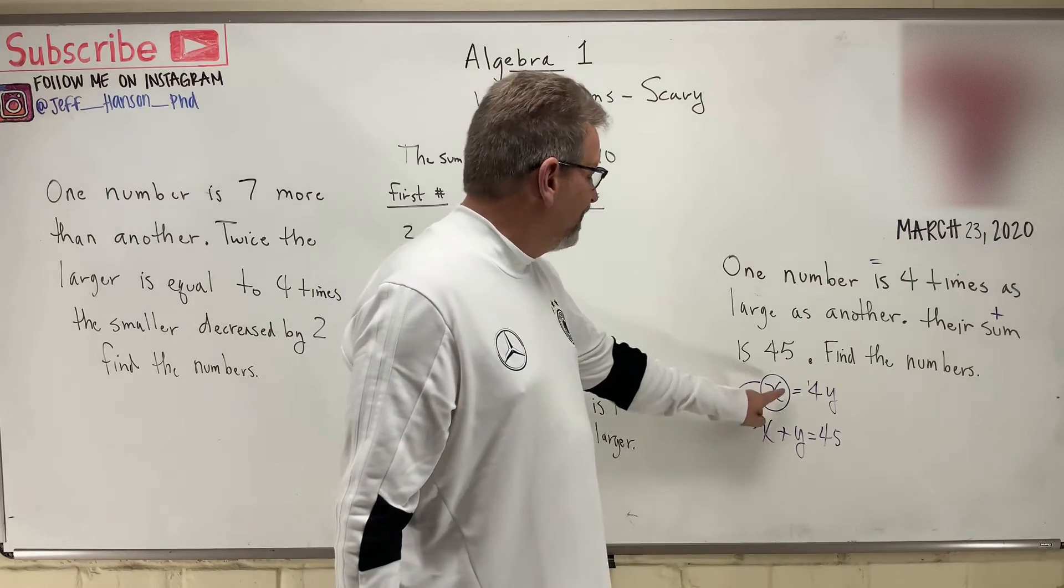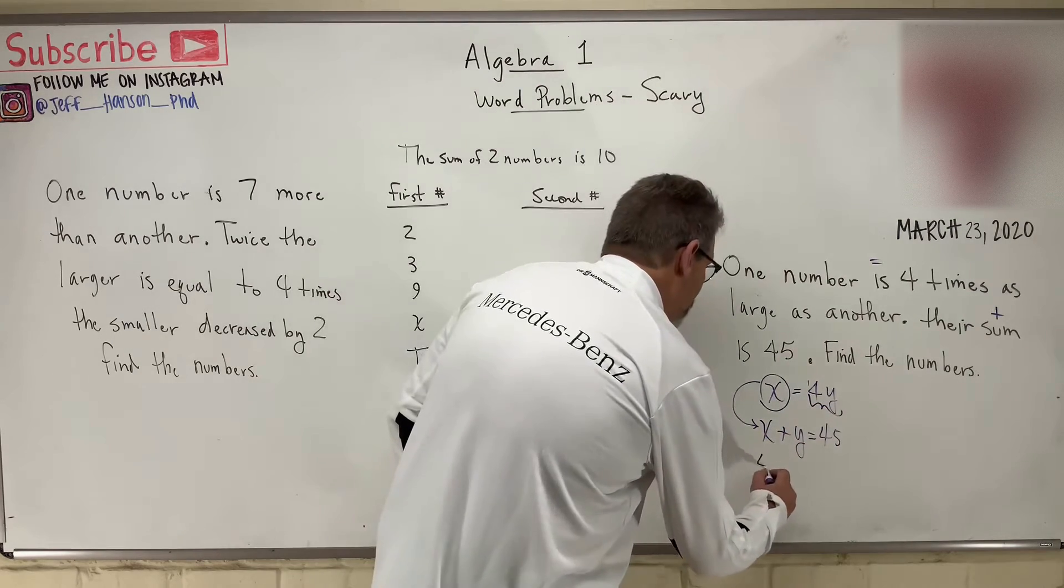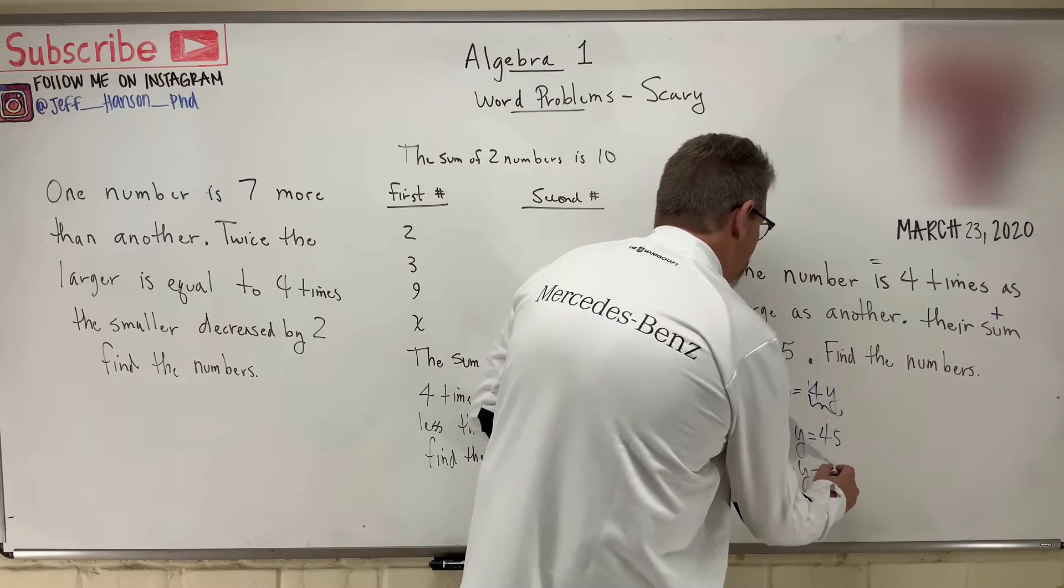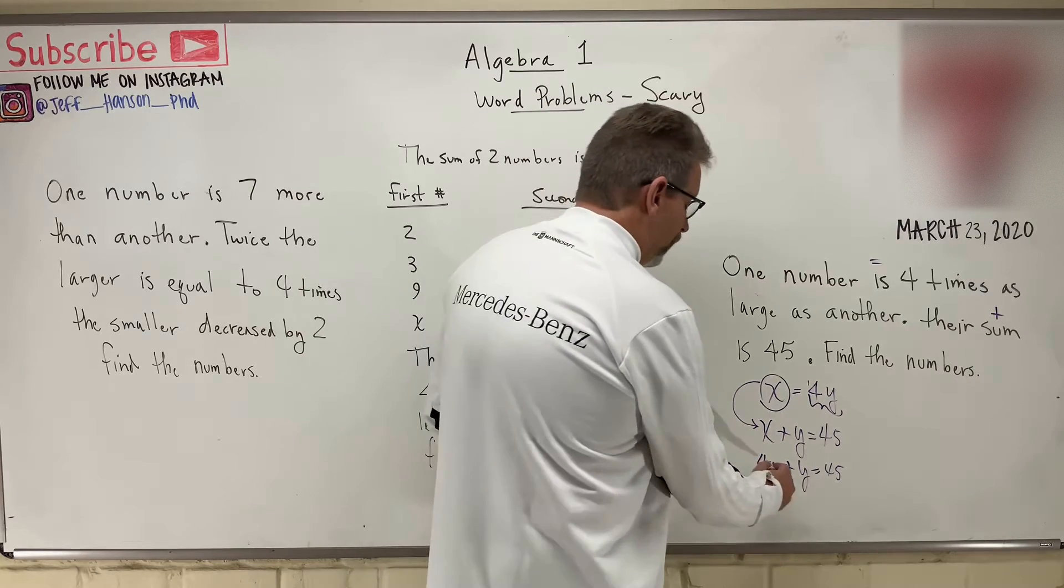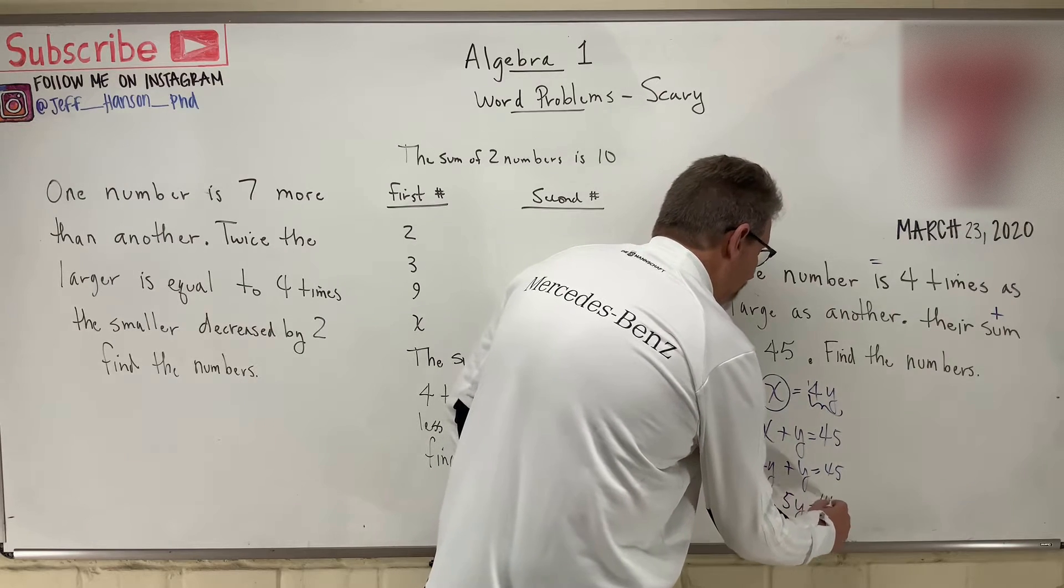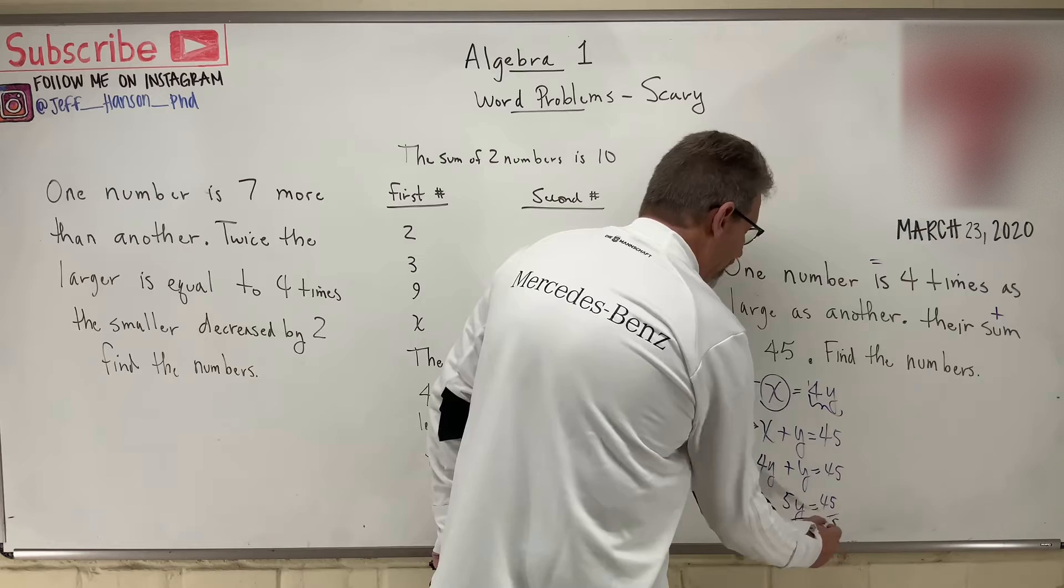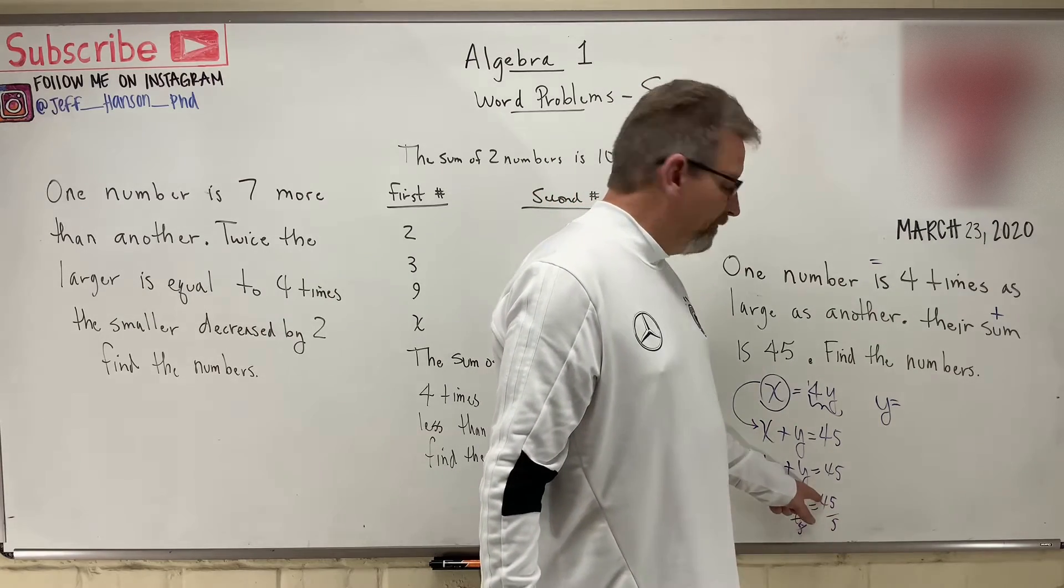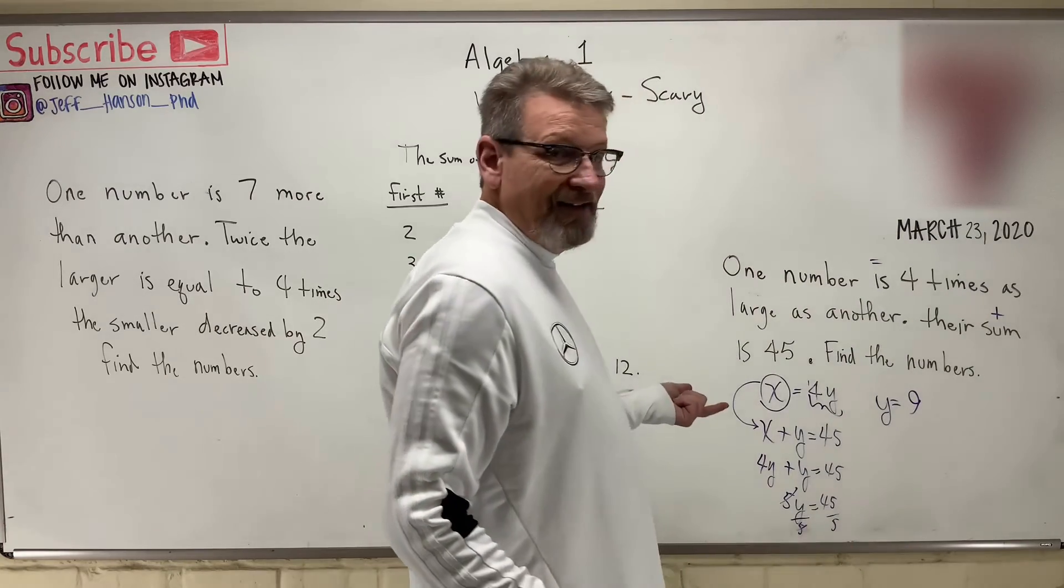If I substitute this four Y in for X, what do we get? We'll get this four Y there, I plugged him in, plus another Y is equal to 45. Four Y's plus another Y is 5Y equals 45. How do we get rid of the five? Divide it by five. And so Y is equal to, the fives cancel out. How many times does five go into 45? Nine times. Y is equal to nine.